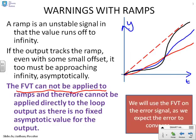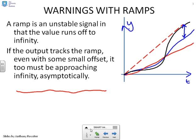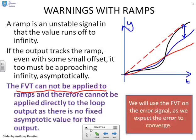Instead, we need to use the final value theorem on the error signal. The difference between the output and the target may still be finite even though the underlying signals are diverging to infinity. So we apply the final value theorem to a signal which converges, and the error signal, hopefully, will converge.